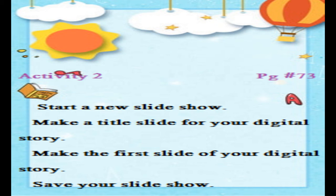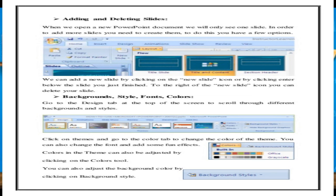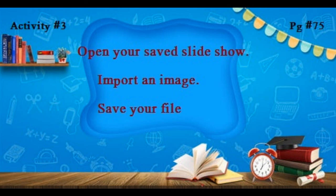Activity number two: start a new slideshow, make a title slide for your digital story, make the first slide, and save your slideshow. Activity number one was to select a character and write a story on paper — now you have to convert that story into PowerPoint slides. I have told you how to make a new slide, give it a title, and save it. Activity number three on page 75: open your saved slideshow, import an image, and save your file. I told you how to open your saved slideshow and how to import an image — either from the computer or by searching online. Stay at home, stay blessed.